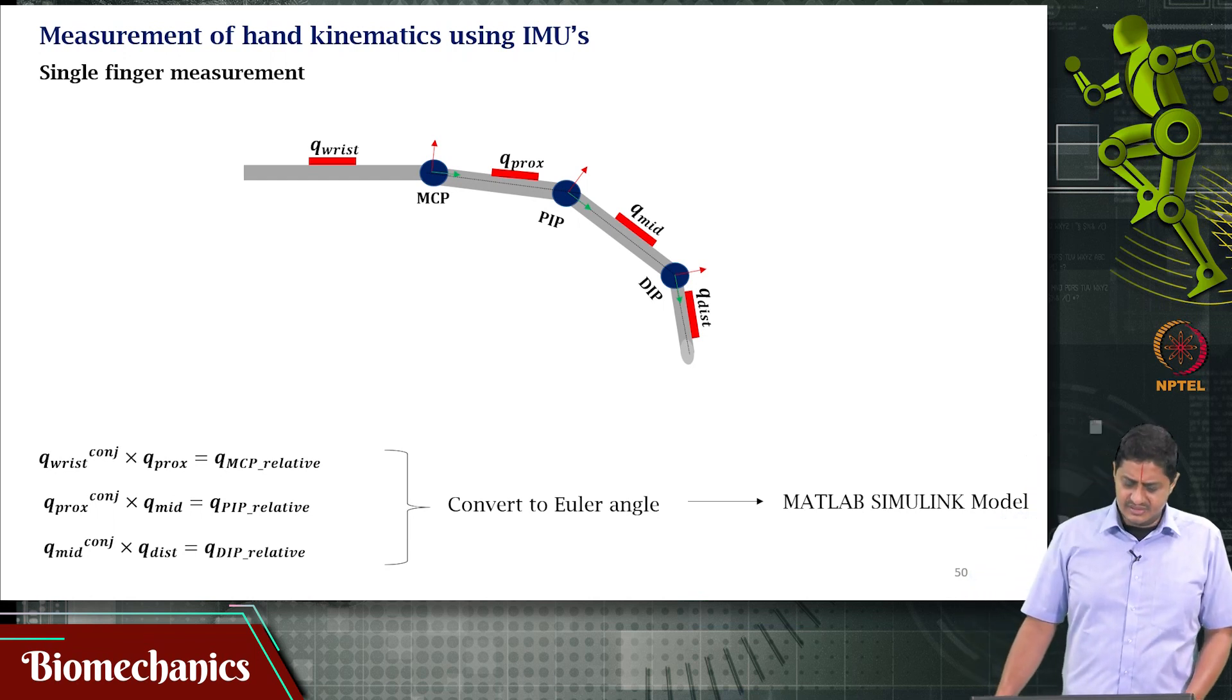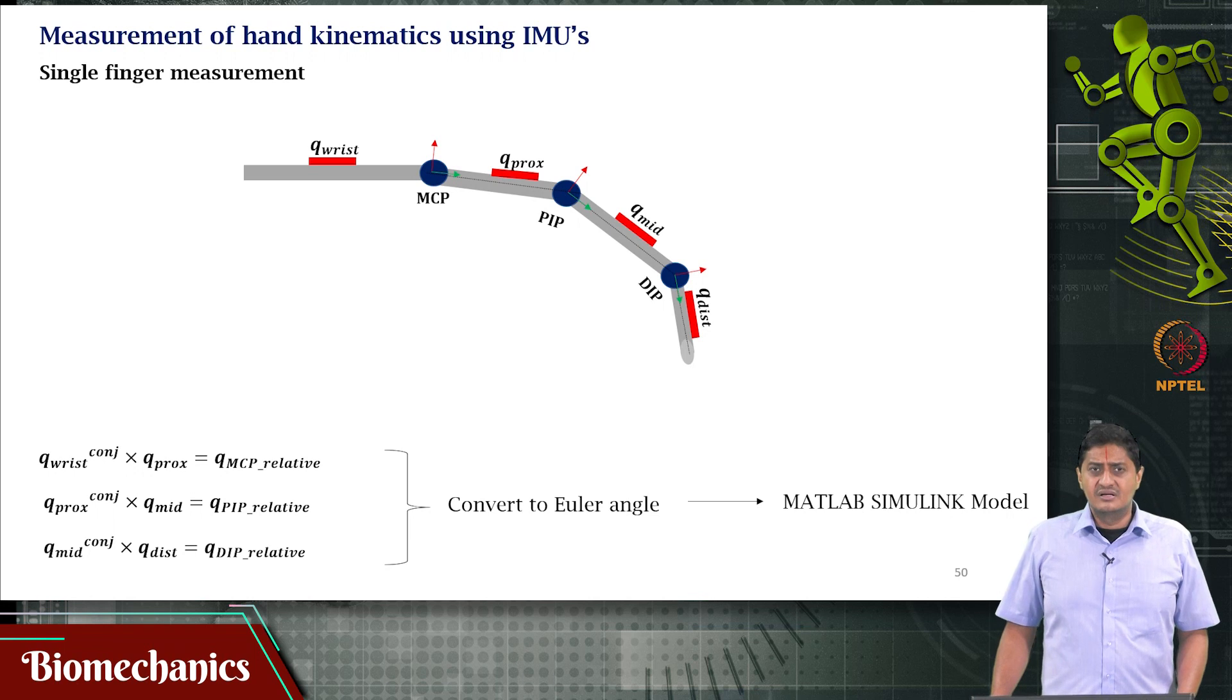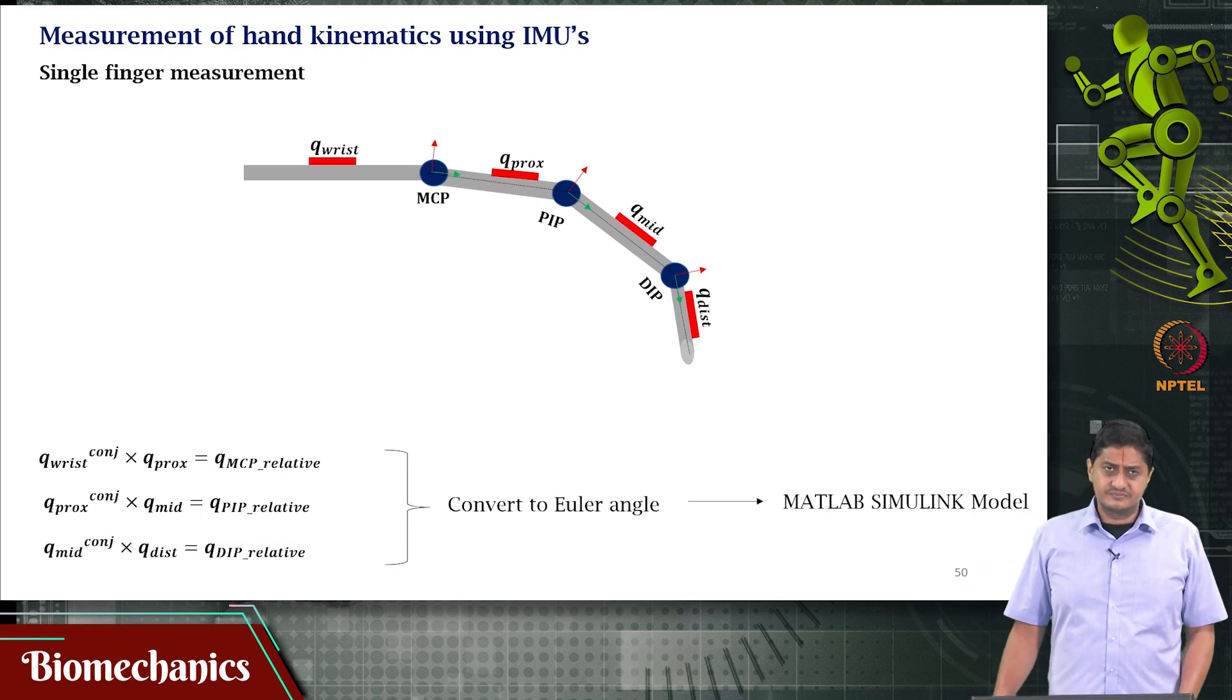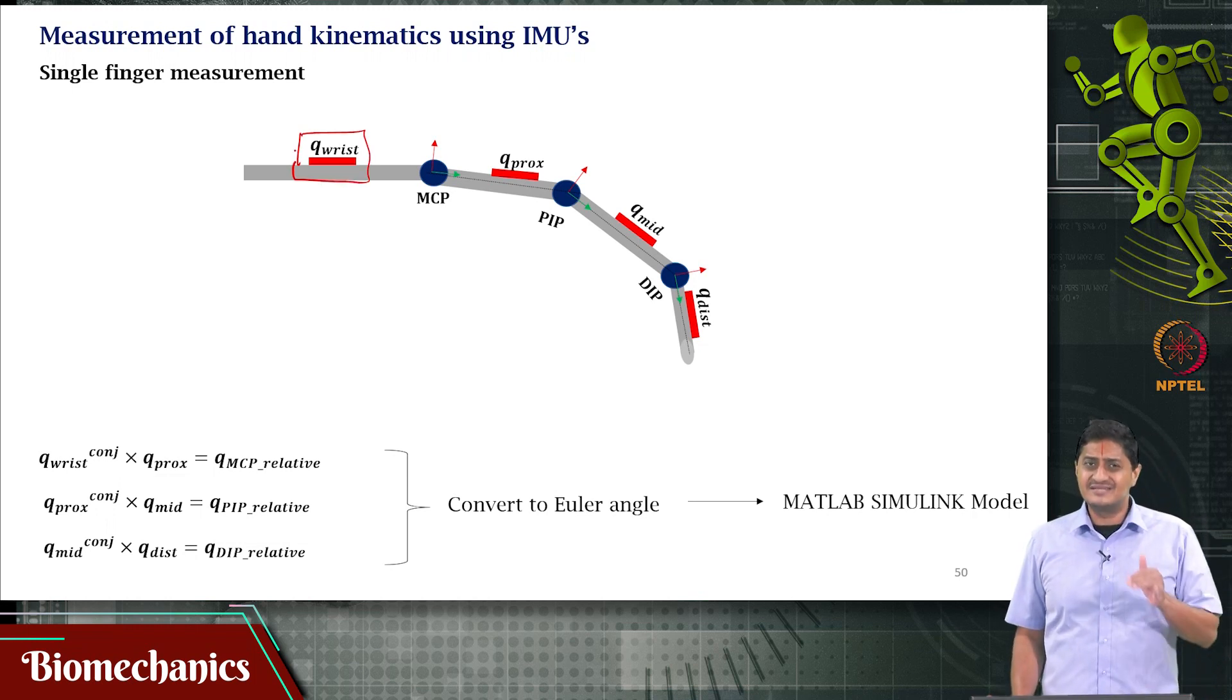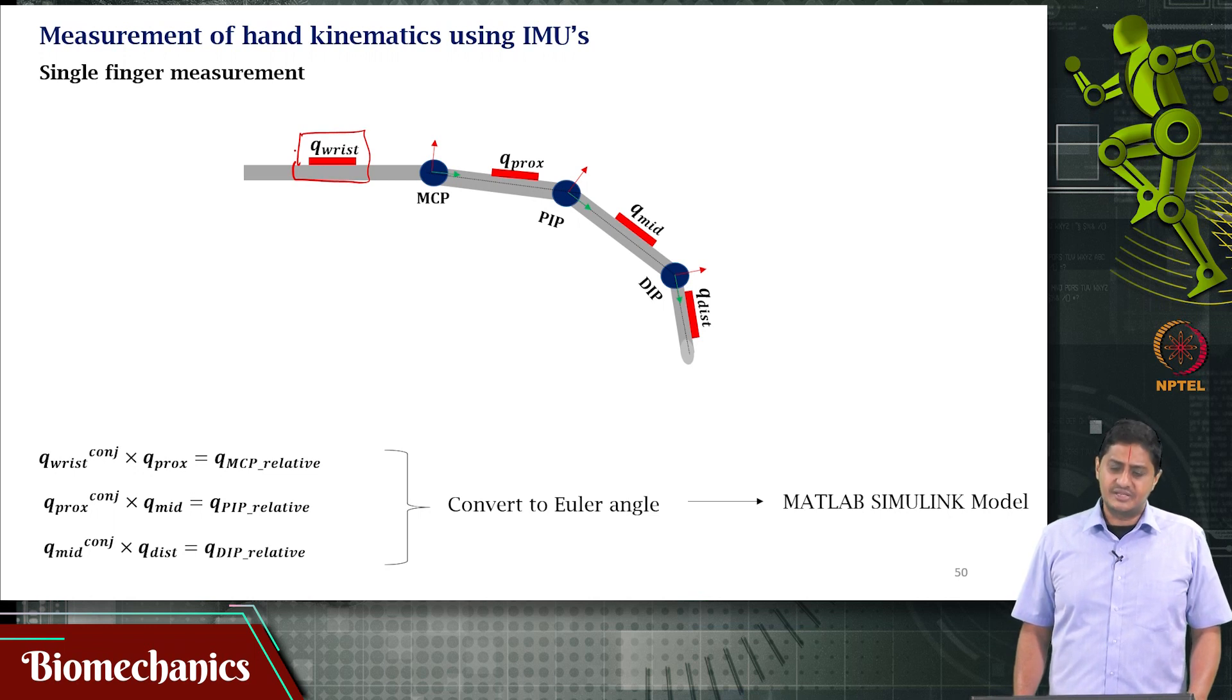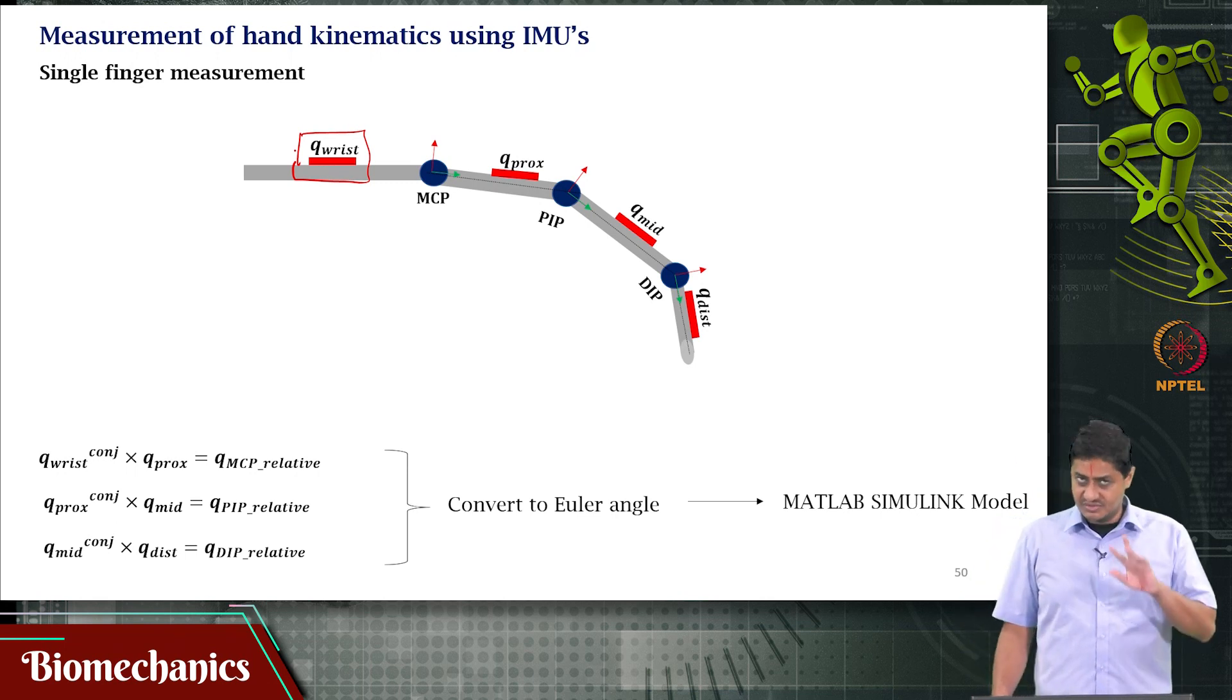Now let's suppose that I have only 2 IMUs. Let's start with a simple situation where I'm interested in finding how much the finger has moved relative to the wrist or carpal bones. You place the reference sensor at a point just distal to the wrist joint.